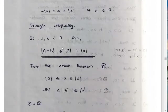If A and B are real numbers, then mod A plus B is less than or equal to mod A plus mod B. This is the Triangle Inequality.